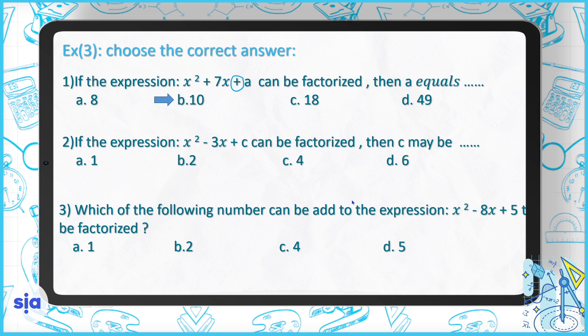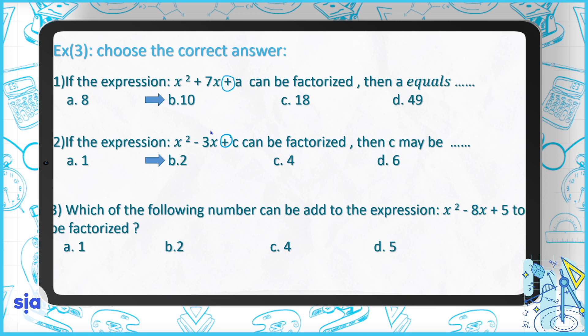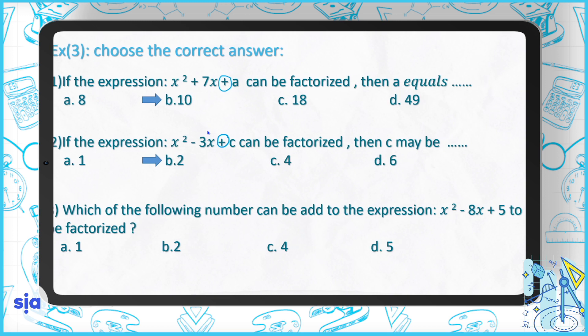Question 2: if the expression x squared minus 3x plus c can be factored, what can c be? Since the last sign is plus, we're looking for a number whose factors sum to 3. The answer is 2.